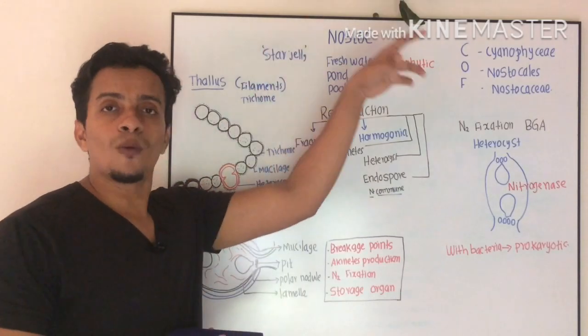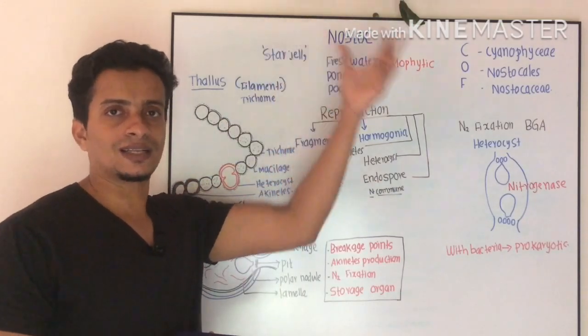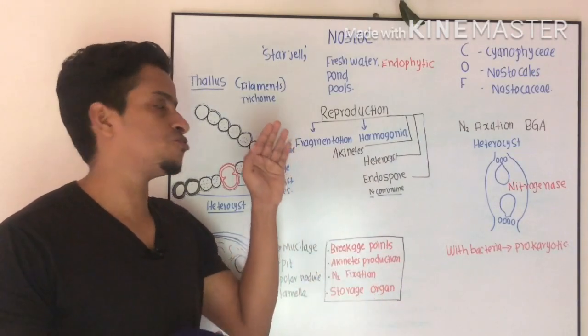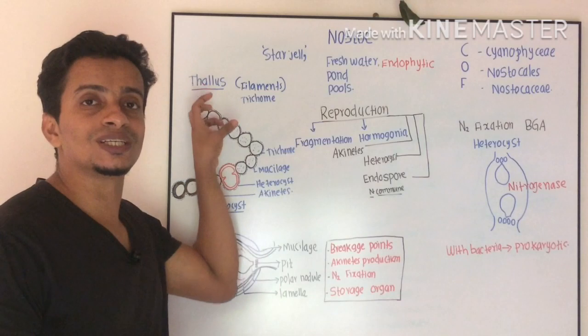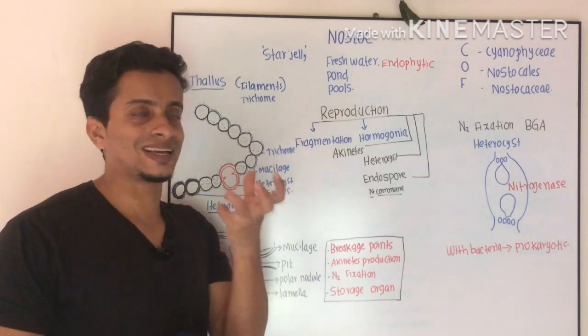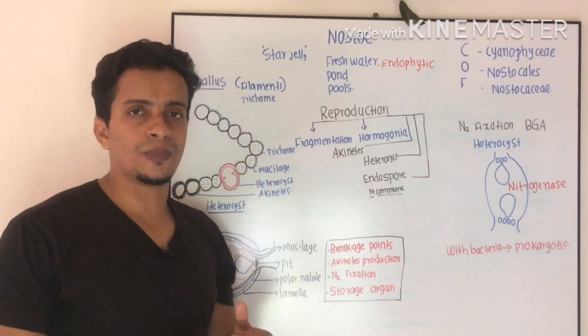They are commonly known as star jelly. Why is it known as star jelly? Because of the presence of mucilaginous secretions around the thallus. The thallus has mucilaginous secretions, hence the name star jelly.